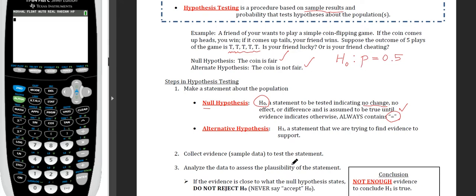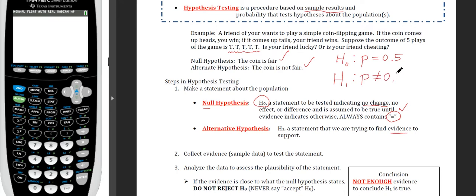The alternative hypothesis is the hypothesis that we're trying to prove or support, though we need evidence to do so. The alternative hypothesis, written as H₁, would be that the proportion of heads is not equal to 0.5. Maybe I think it's greater than that, maybe less — either way, I'm trying to show the opposite and demonstrate that the null hypothesis is not the case.